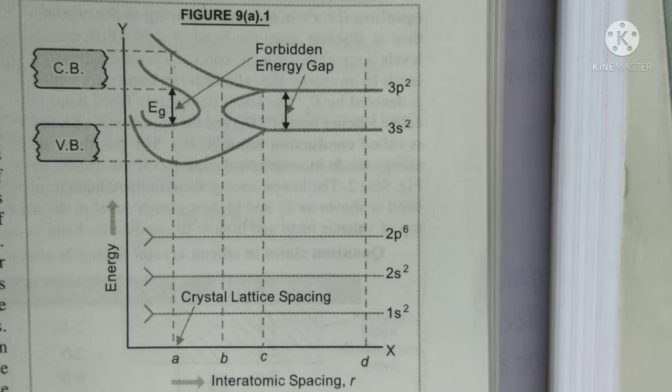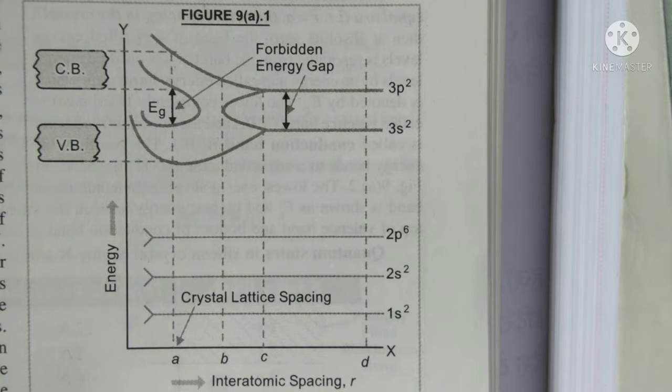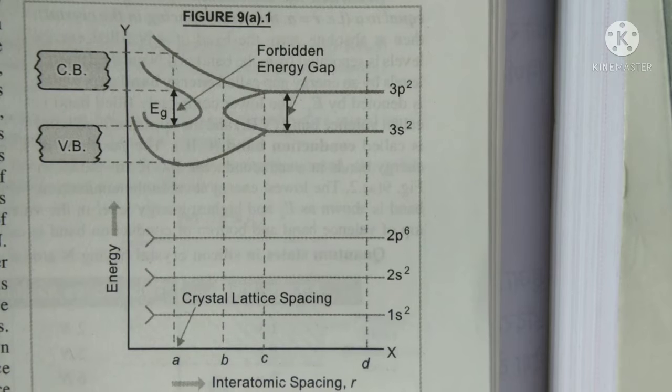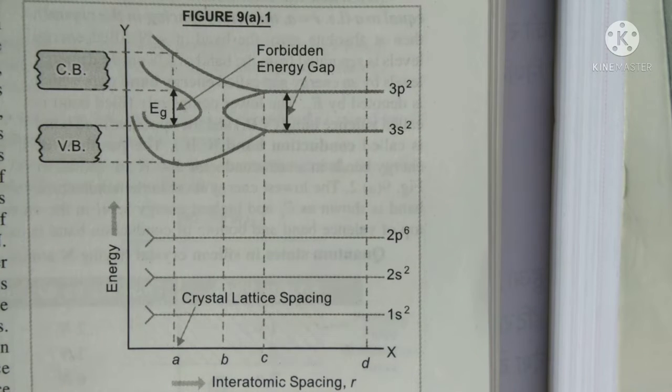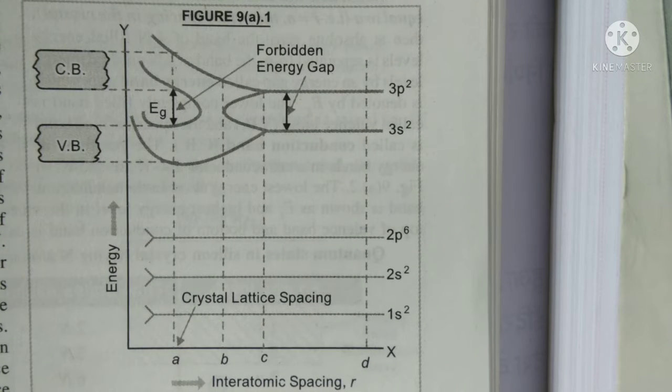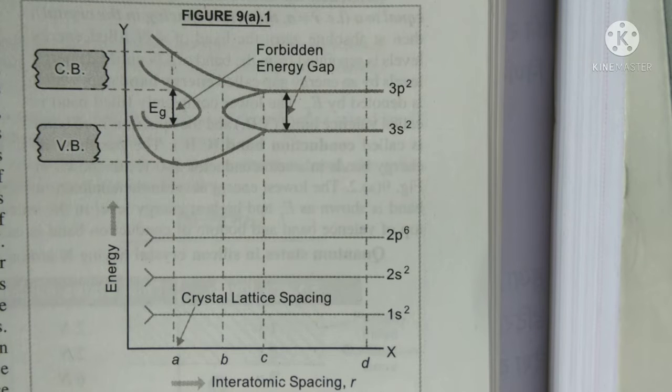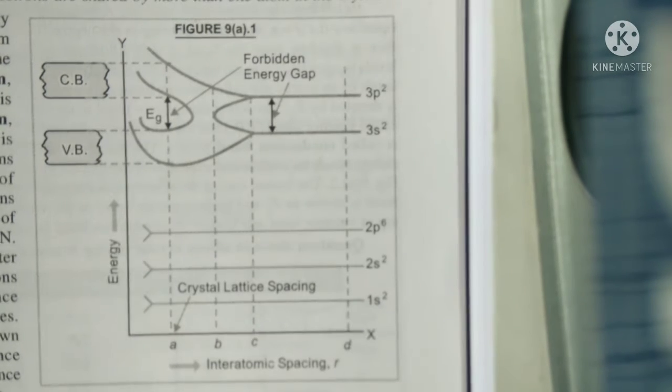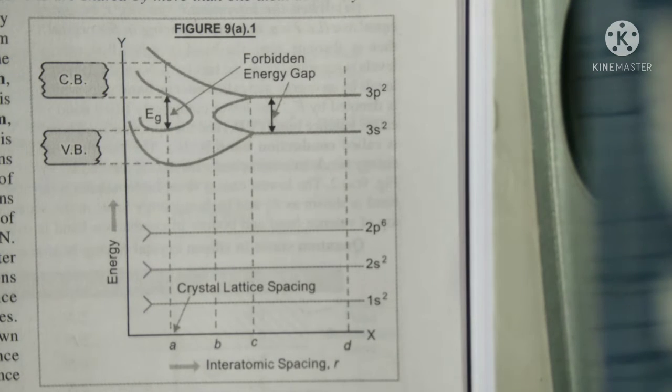The inter-atomic spacing R is shown on x-axis and energy on y-axis. The distance R equal to A, which is nearly equal to 1 angstrom corresponds to equilibrium distance between atoms or actual crystal lattice spacing. If the inter-atomic spacing of silicon atom is very large, i.e. R equal to D, which is very very greater than A, there is no inter-atomic interaction.